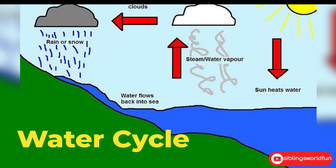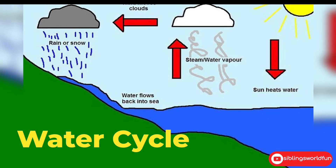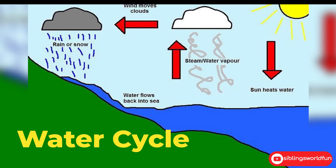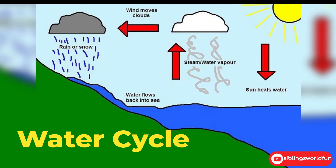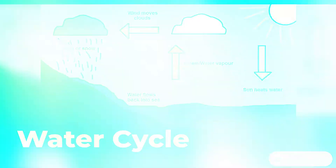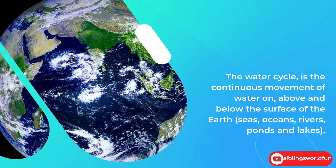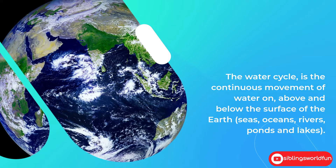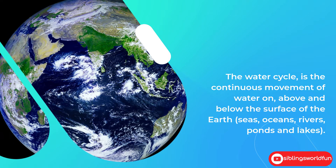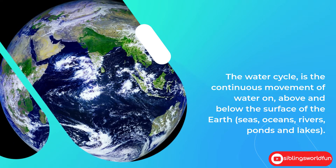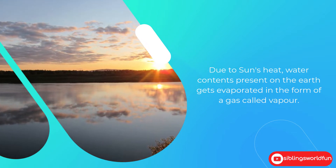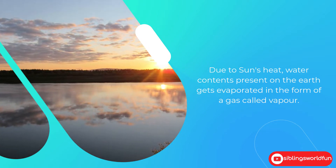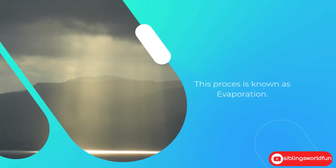Hello everyone, welcome to our YouTube channel. In this video, we will take you through the water cycle. The water cycle is the continuous movement of water on, above, and below the surface of the earth — seas, oceans, rivers, ponds and lakes. Due to the sun's heat, water present on the earth gets evaporated in the form of a gas called vapor. This process is known as evaporation.